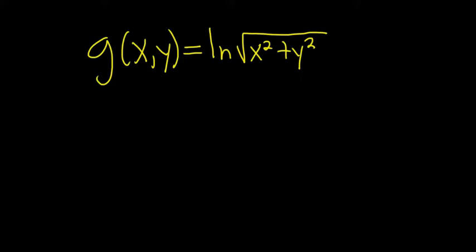Find the partial derivative with respect to x and with respect to y. Solution: We'll start off by rewriting this function to get rid of this square root.